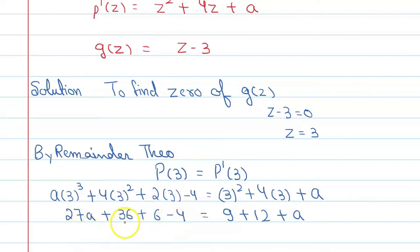Now we add these numbers: 36 + 6 is 42. 42 minus 4 gives 38, so 27a + 38. This equals 12 + 9, which is 21 + a.